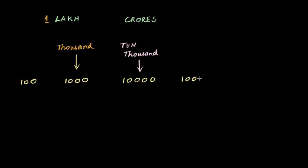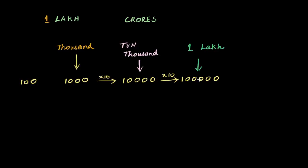If I take this even further and make it one followed by five zeros, this is my first six-digit number — a big number. What is this really? It's thousand multiplied by ten to get ten thousand, multiplied by another ten to get this. So it's ten thousand multiplied by ten — ten times ten thousand — or a hundred thousand. It just so happens that in our Indian system we call this one lakh. So one lakh is basically the number one followed by five zeros.